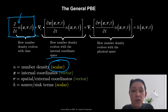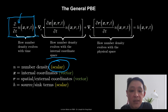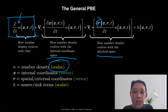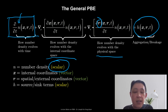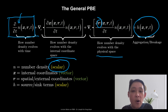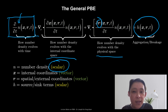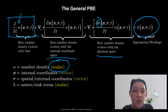The third term in the general population balance equation tells us how the number density evolves with the physical space. R here is the physical space. The last term, H here, is the source or the sink term that will account for any possible aggregation or breakage of the particles involved — any interaction between the particles whether they break or they combine together to form one large particle. This will be accounted for by the source and the sink term.